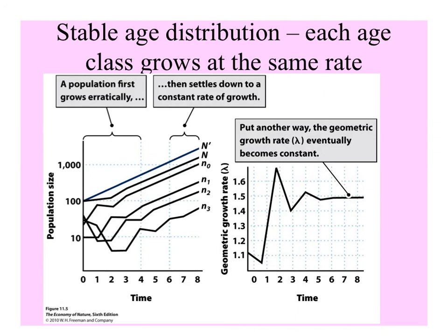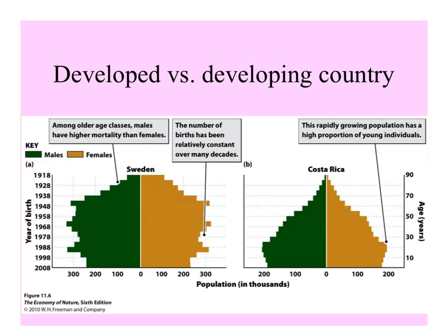The graph on the right shows values of lambda bouncing around for a while and then eventually becoming constant, not only for the whole population but for every age class. It's interesting to compare age distributions of developing countries versus a developed country. On the left is Sweden, with more older individuals, versus a developing country where the greatest number of individuals are young — because in the developing world, the probability of dying at a younger age is greater, so fewer individuals reach old age.